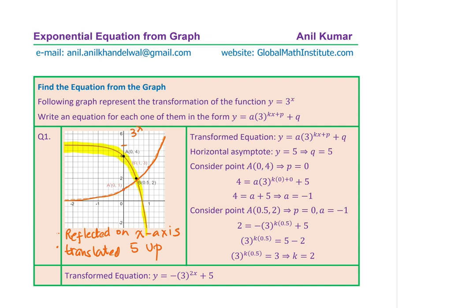Starting from here, you can write down some values in the given equation and then consider points. We are writing the equation in the form of a times 3 to the power of kx plus p, plus q. Now q is basically the vertical translation. In this case, it is clearly 5. So we know the function has been translated 5 units up, and therefore the q value should be 5. We can write 5 for q in our equation.